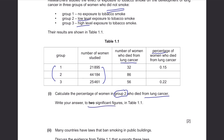Write your answer to two significant figures in Table 1.1. To calculate the percentage, you divide the number of women who died from lung cancer by the total number of women studied, which is 44,184, and multiply by 100. You get 0.1946 and so on, but rounded to 2 significant figures, it's 0.19%.